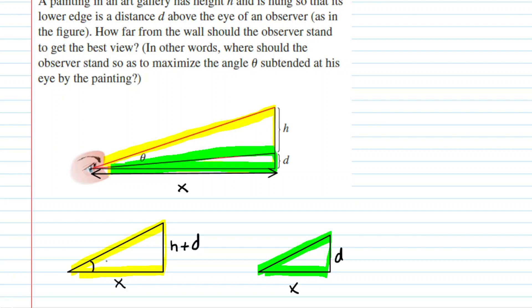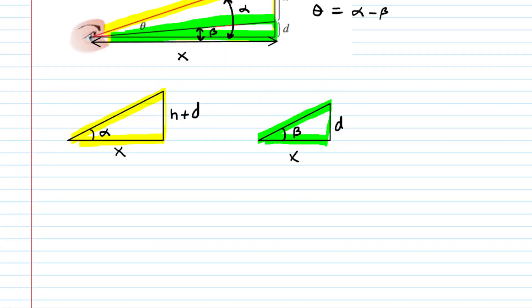Let's introduce some other labels. We are going to call this angle alpha and this angle beta. In the original drawing, alpha would be this larger angle, and beta would be this smaller angle. Hopefully we can see from the diagram that the angle theta would equal alpha minus beta, and that is going to become useful. So theta is equal to alpha minus beta.